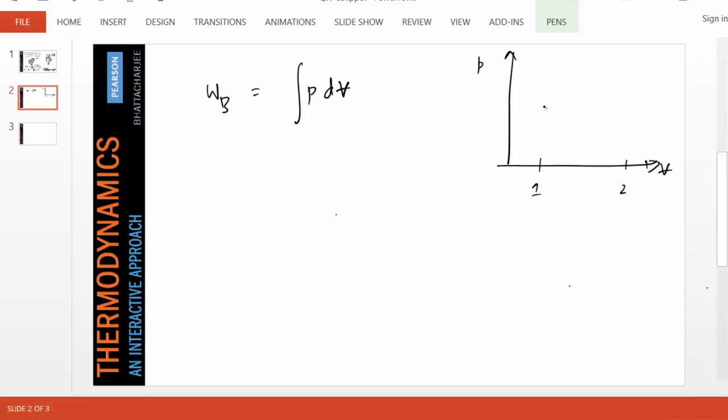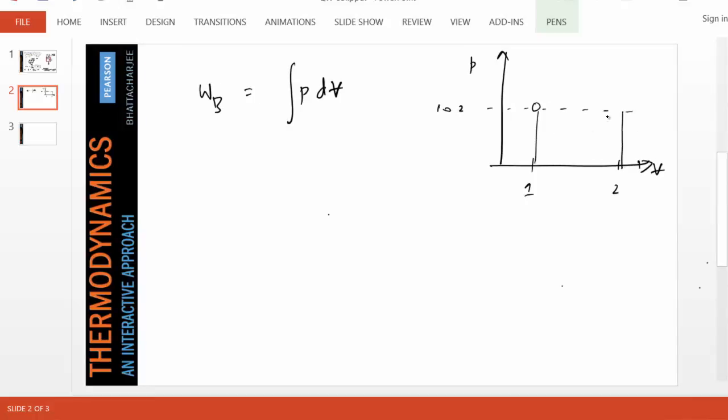We know the volume goes from one to two meter cube and the pressure never changed. Suppose initial pressure is 102 kPa, the final pressure is 102 kPa. Therefore this area under the PV diagram is simply 102 times 2 minus 1, which is 102. That's kilonewton per meter squared times meter cube, which is kilonewton times meter, which is 102 kilojoules. We just figured out the boundary work transfer is 102 kilojoules and it is positive.